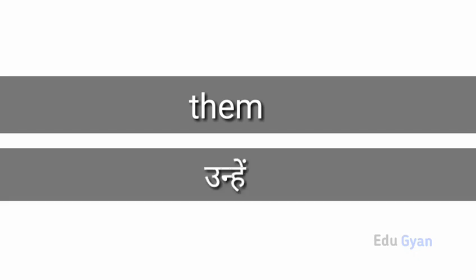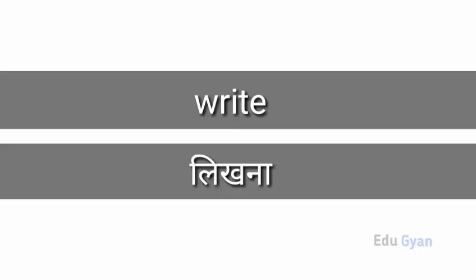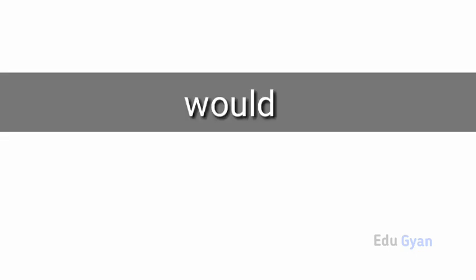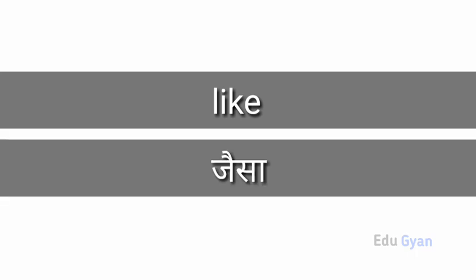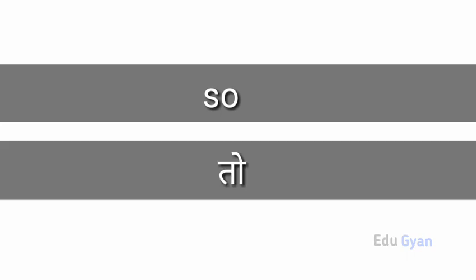Them. They means unhae. Right means likhna. Would means hogha. Like means jaisa. So means to.